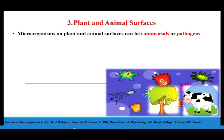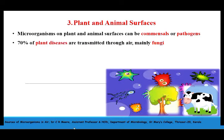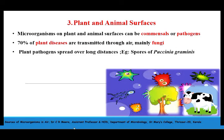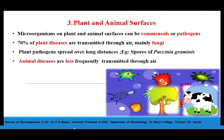Coming to the third source, plant and animal surfaces. The plant and animal surfaces contain microorganisms which can be commensal cells or pathogens. 70% of plant diseases are transmitted through air because the majority of plant diseases are caused by fungi, and both sexual and asexual spores of fungi can be easily disseminated through air. Plant pathogens can spread over long distances through the air — for example, spores of Puccinia graminis. Animal diseases are less frequently transmitted through air because fungal infections are less common in animals compared to plants.